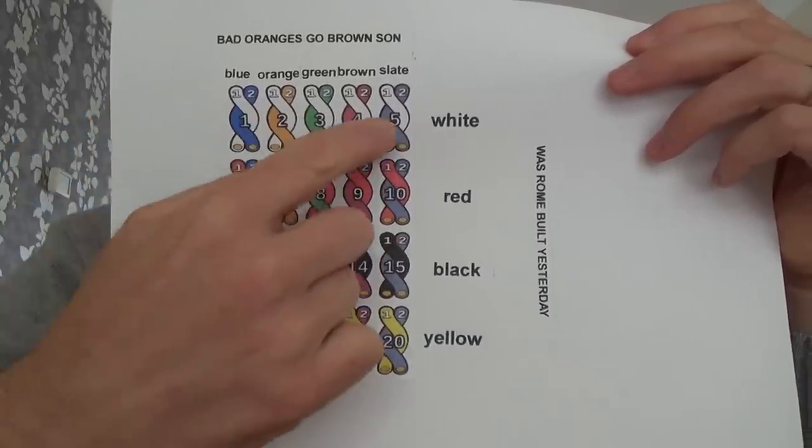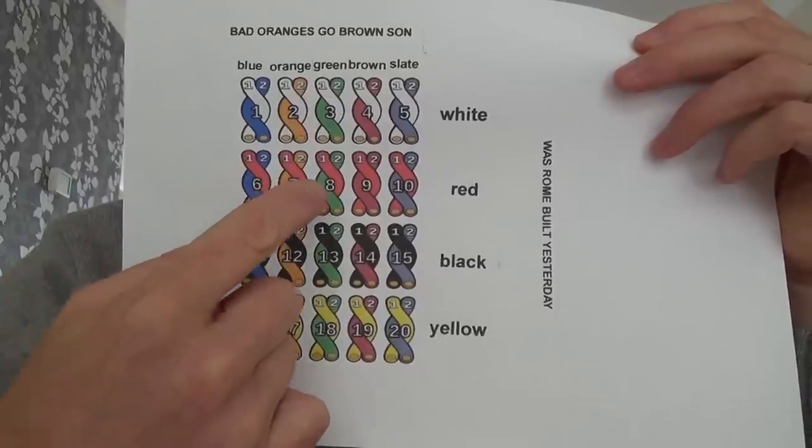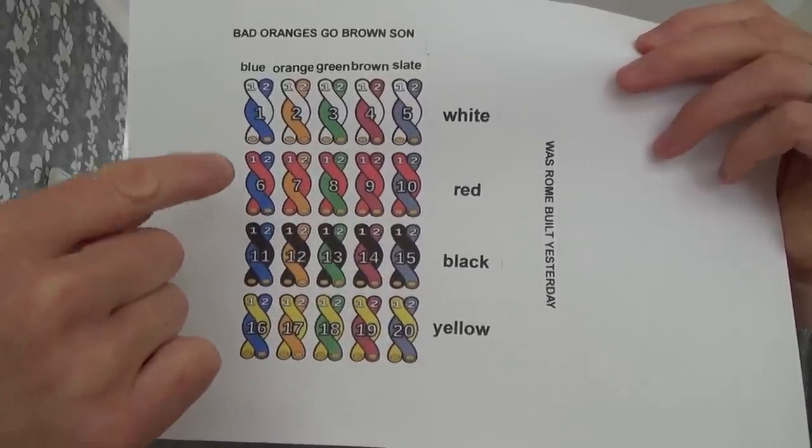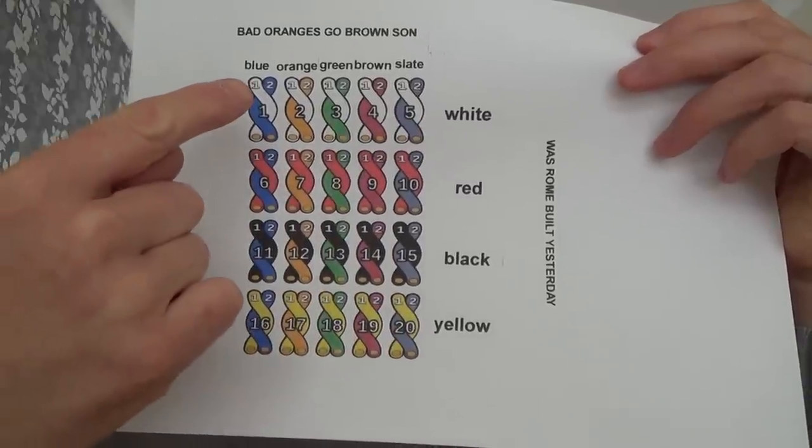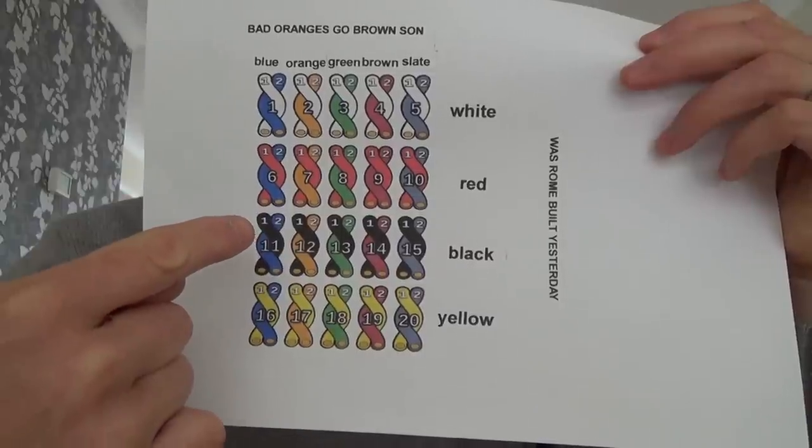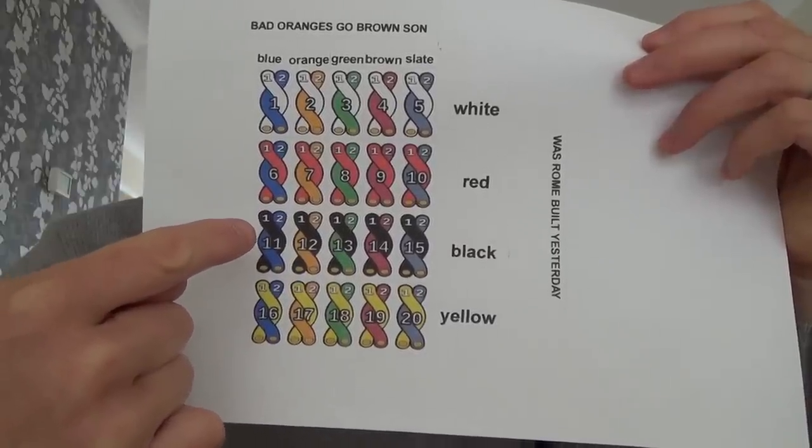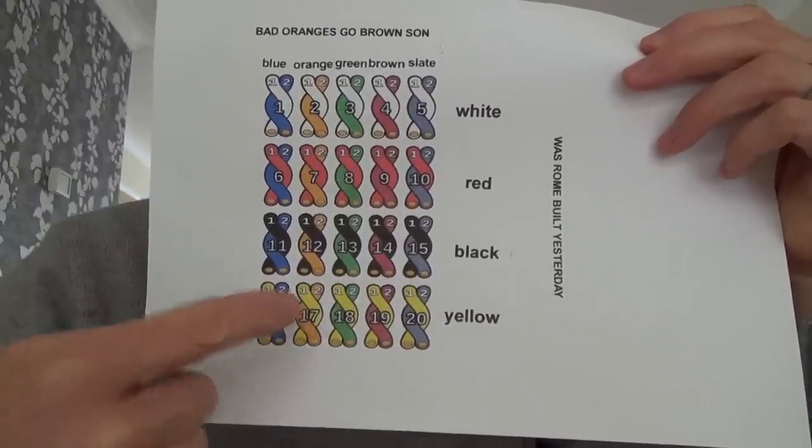So you've got five pairs here. Now, the next five pairs also use the blue, orange, green, brown, and slate. But the first wire is different. So on the first five pairs, the first wire is white. On the second five pairs, it's red. From pair 11 to pair 15 is black. And then from pair 16 to 20, it's yellow.